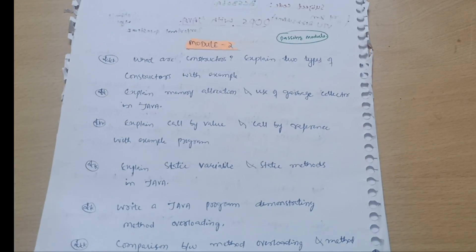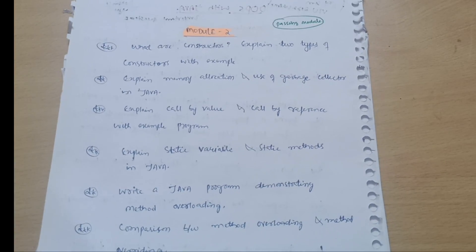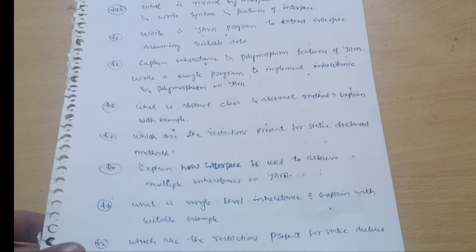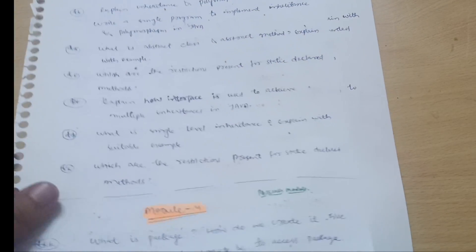Next module is the second module. This is a passing module. Comparatively, it is easier than the first module. Then accordingly, module 3 is the passing module.